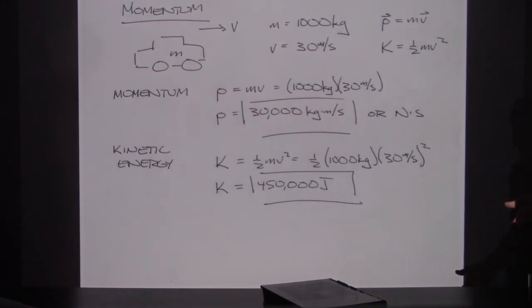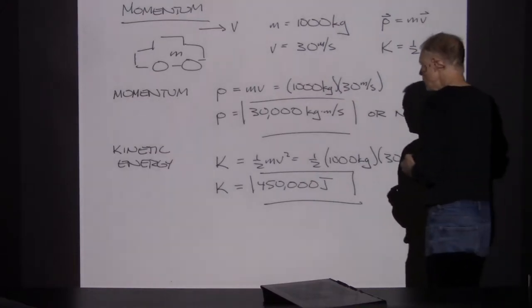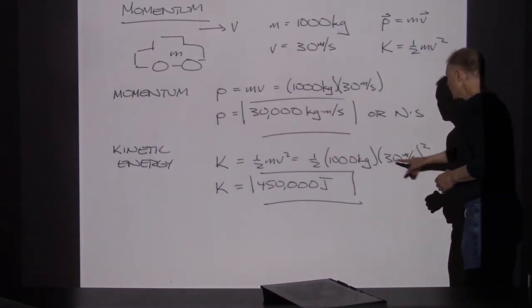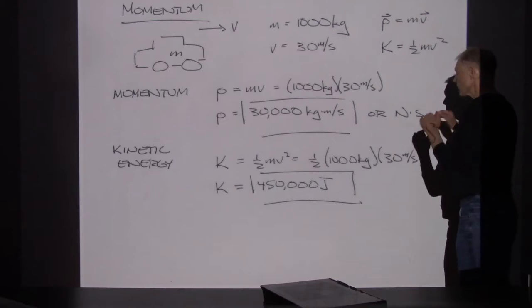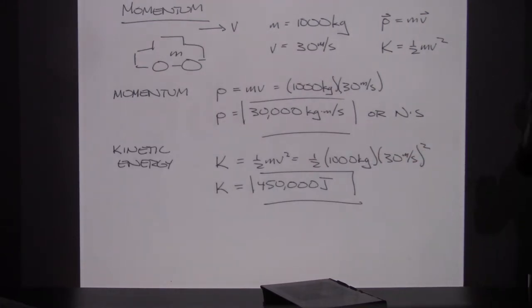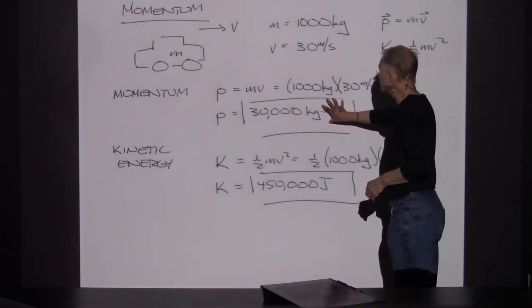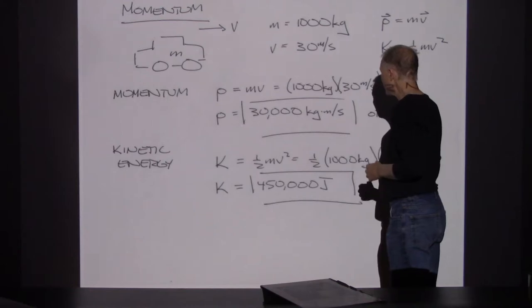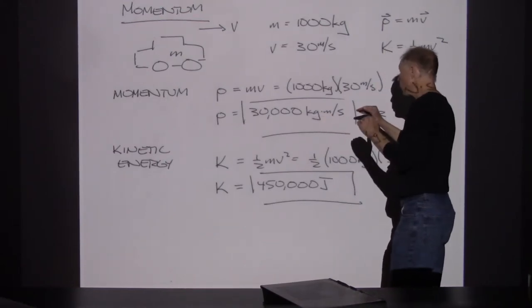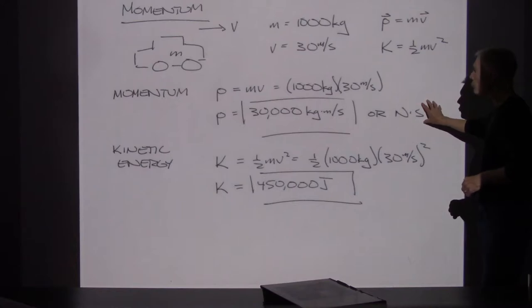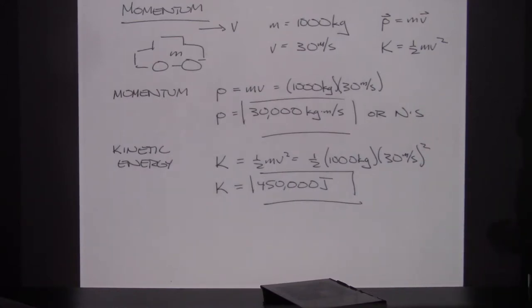When we look at energy, it had a different set of units. Kinetic energy was 1/2 MV squared, giving us kilograms meters squared per second squared — that combination we call joules. We don't have a dedicated momentum unit. The other possible combination is to write this as newtons times seconds. Either of those momentum units will work well.